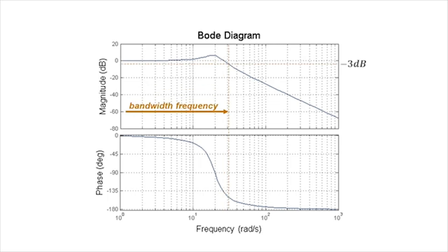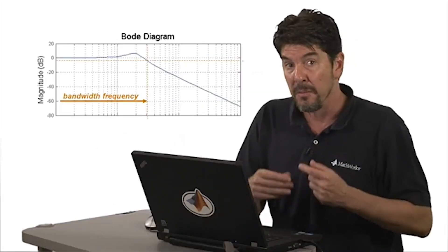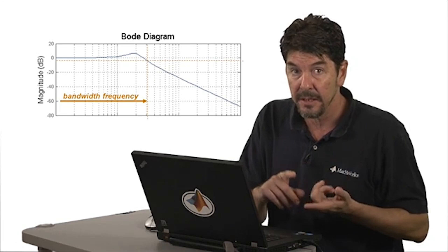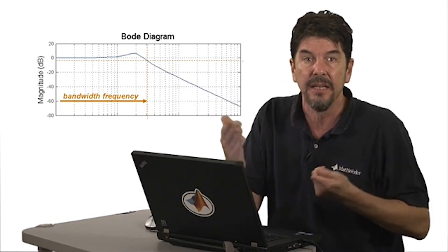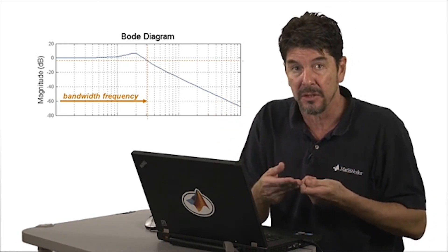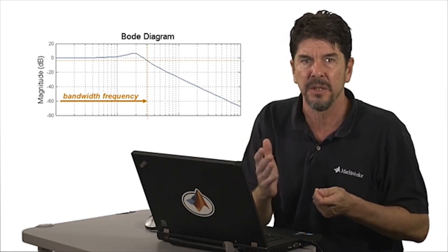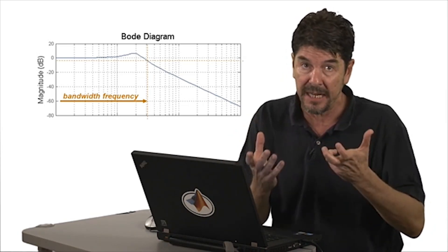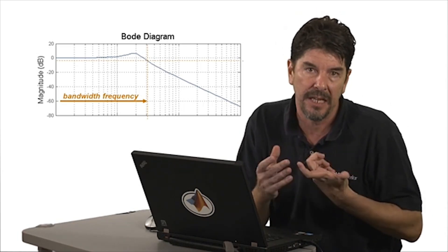The last important characteristic is what is called the bandwidth frequency. This is usually defined at the point where the magnitude crosses minus three dBs. Negative three dBs means the attenuation is going below the RMS value of the input signal, where the output to input amplitude ratio is the square root of two over two. From a practical perspective, the bandwidth of a system is commonly used as a measure of the upper limit at which the system dynamics can be controlled. Any inputs past that frequency will be severely attenuated by the system dynamics and will barely be seen in the output.